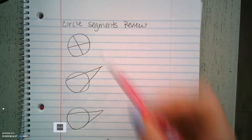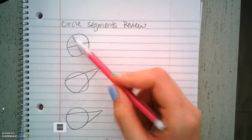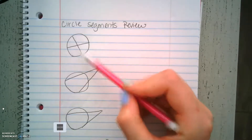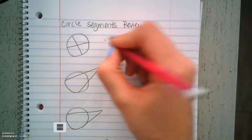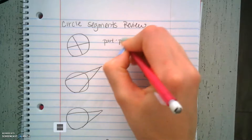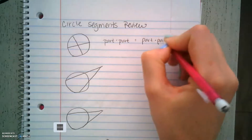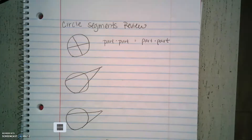The first type of segment we learned about is a chord. Remember, a chord is a segment that stays within our circle — two segments inside our circle, and it's not necessarily a radius. That formula is part times part equals part times part, looking at the parts that make up one chord.